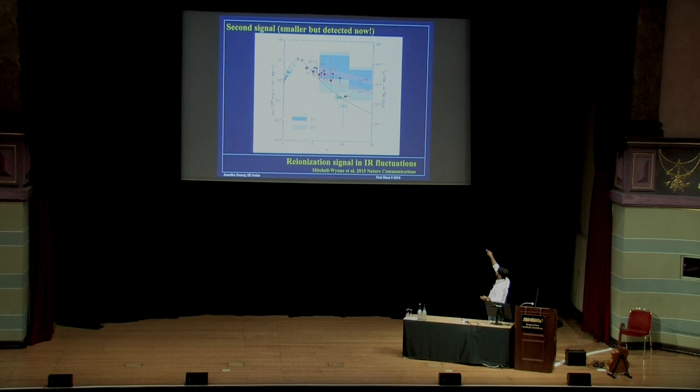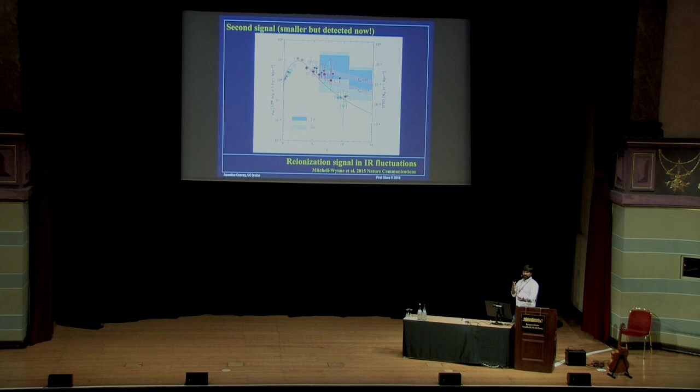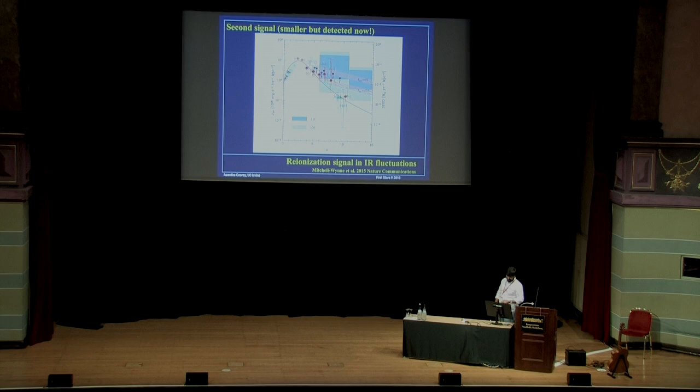We seem to see slightly higher UV luminosity density in fluctuations, but these have very large error bars, so you have to take that for what it is. This is only done in the two GOODS south fields—the only two fields where we can do it. There's probably a huge amount of cosmic variance not accounted for here. Going forward, there will be more data with things like Euclid and WFIRST where we can work this out very well.